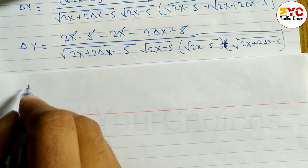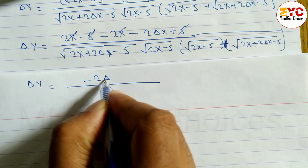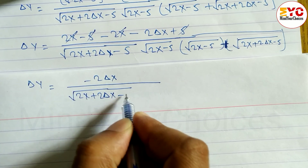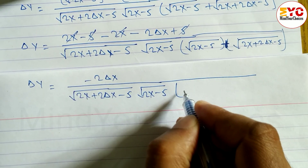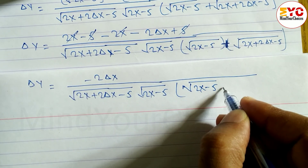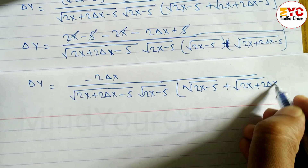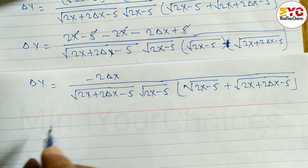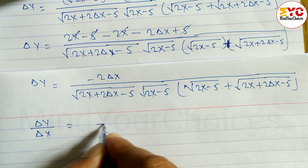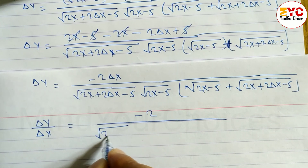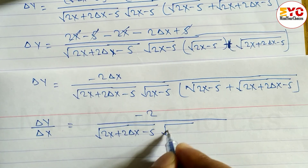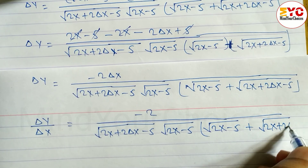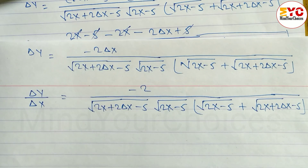So del y equals minus 2 del x divided by root under (2x + 2 del x - 5) times root under (2x - 5) times the bracket (root under (2x - 5) plus root under (2x + 2 del x - 5)). Dividing both sides by del x, we get del y/del x equals minus 2 divided by the same denominator.